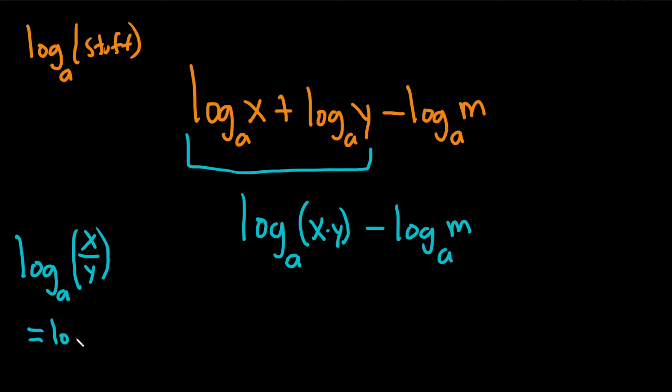This becomes the log base a of x minus the log base a of y. So the fraction turns into a subtraction. Here we have the subtraction turning into a fraction, so we're going backwards. It'll become a single log.